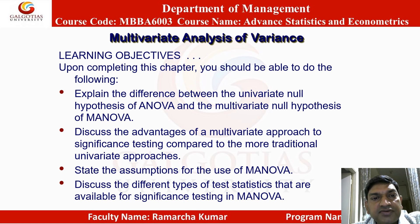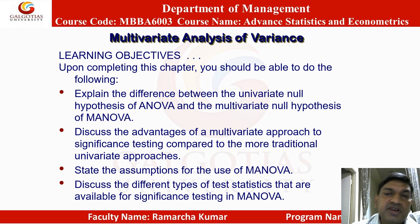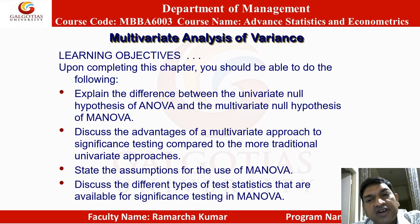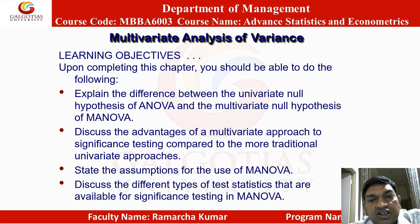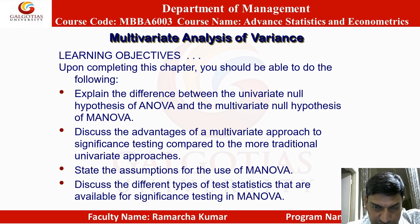Learning objectives are: upon completing this chapter, you should be able to do the following. First, explain the difference between the univariate null hypothesis of MANOVA and the multivariate null hypothesis of MANOVA. Discuss the advantages of a multivariate approach to significance testing compared to the more traditional univariate approach.